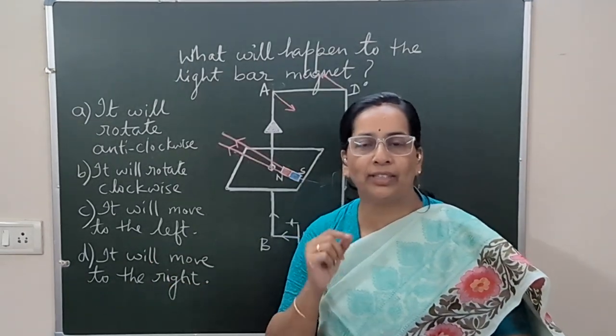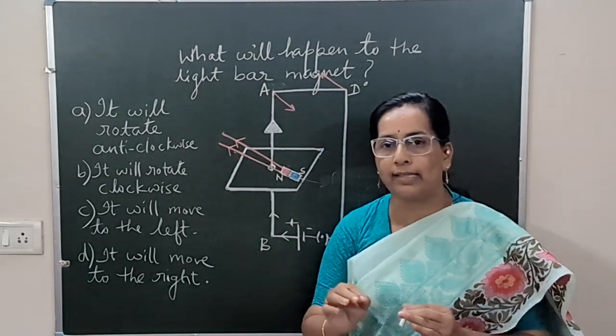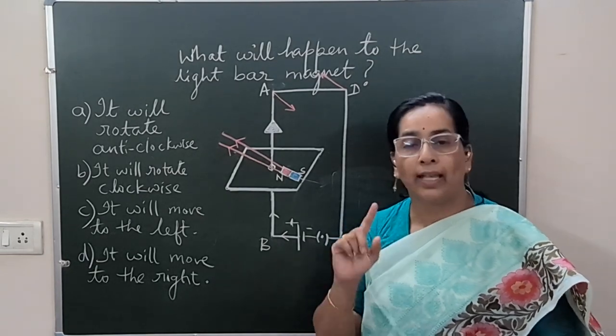To understand in which direction the bar magnet turns near a straight current carrying conductor, consider this circuit diagram. This question is very similar to the function of electric motor.